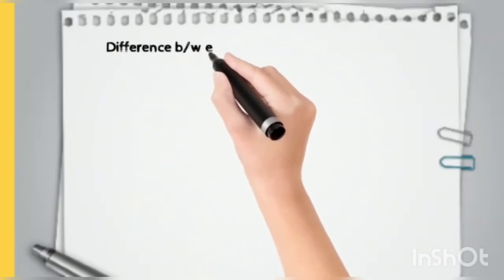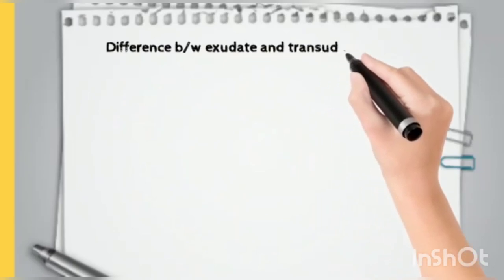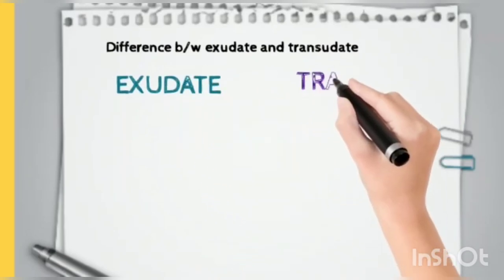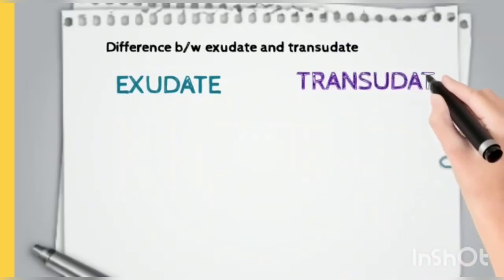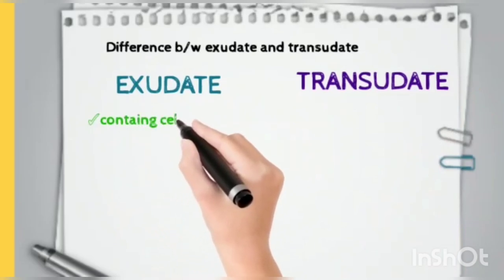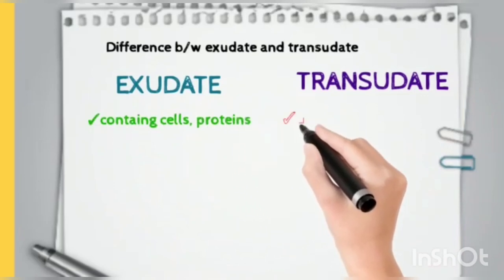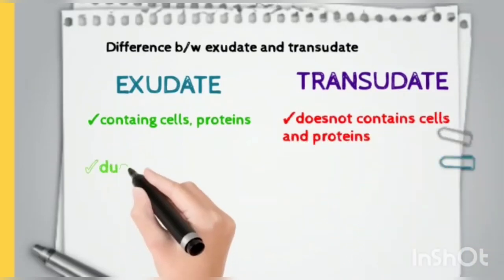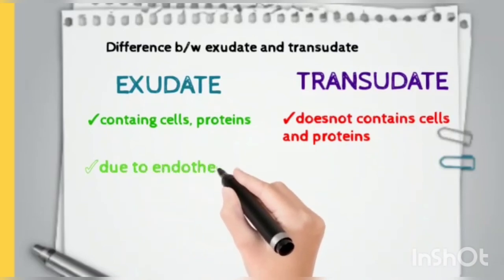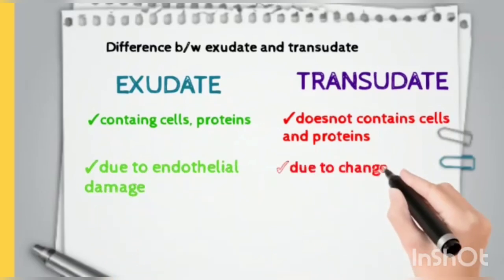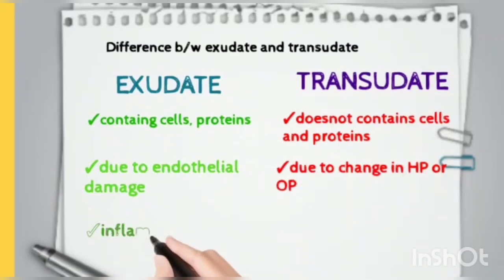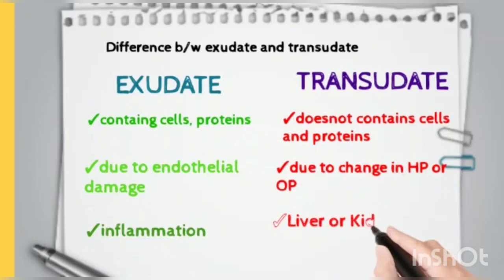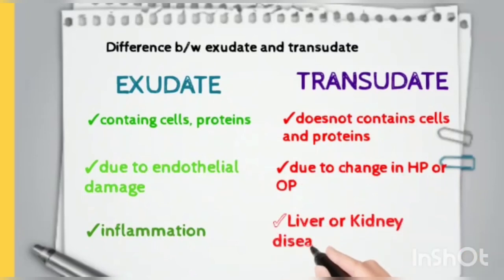Now let us see the differences between exudate and transudate, which are a very common question in examinations as well as viva. Exudate is a fluid rich in proteins and cellular materials, while transudate is a fluid with lower proteins and almost no cellular material. Exudate is due to endothelial damage — anything causing endothelial damage, such as inflammatory damage, leads to exudate. Transudate is due to change in hydrostatic or osmotic pressure, and occurs in liver or kidney diseases in which plasma protein deficiency develops.